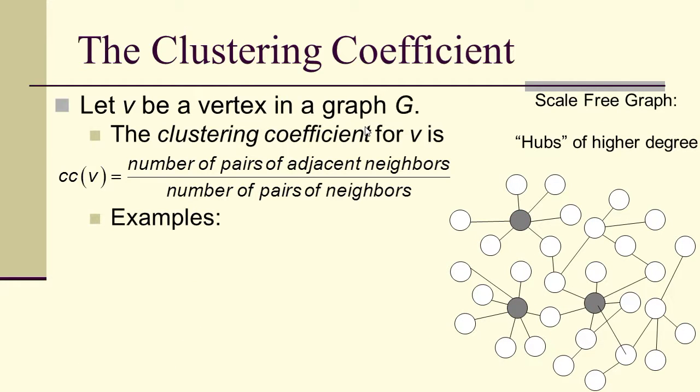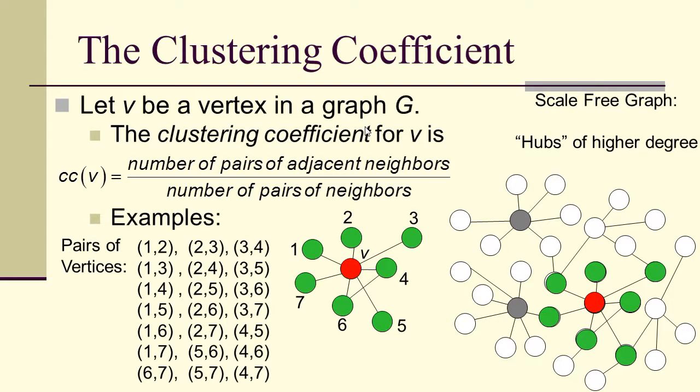A scale-free graph tends to be hubs which are of higher degree connected to other hubs. Let's pick a center of a hub. It's got 7 neighbors, and of those 7 neighbors, there are 21 different ways of pairing those neighbors with each other. So 21 possible adjacencies in the neighborhood, but only 1 that's actually there. 6 is adjacent to 4, or 4 adjacent to 6. Therefore, the clustering coefficient is 1 over 21.